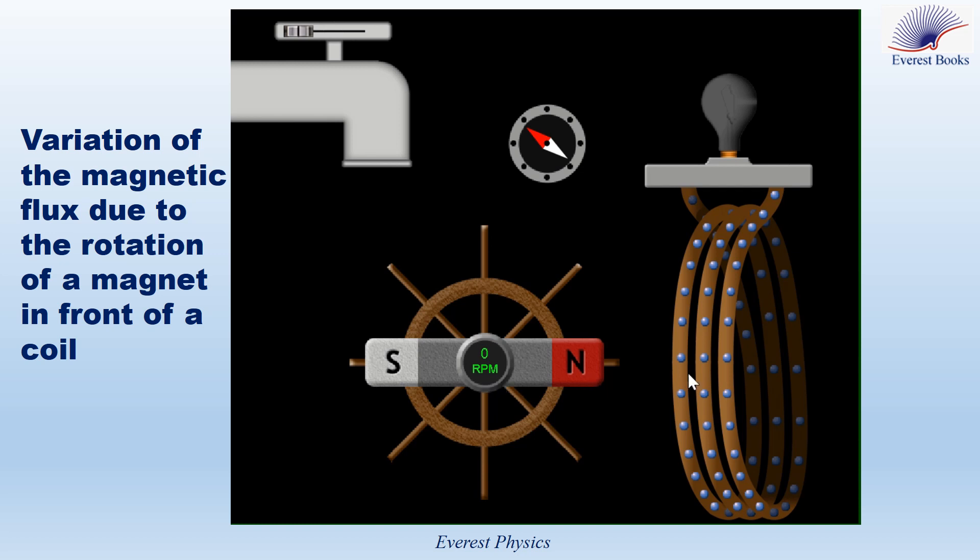Now we have a magnetic flux, or a constant magnetic flux crossing the coil, but the lamp does not glow.